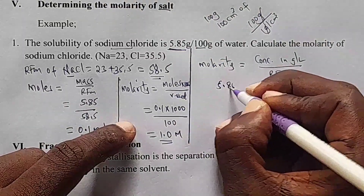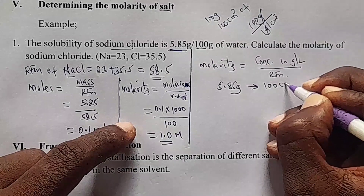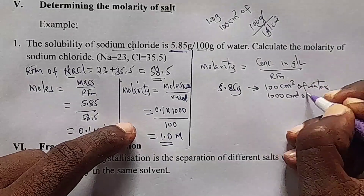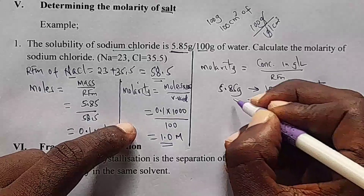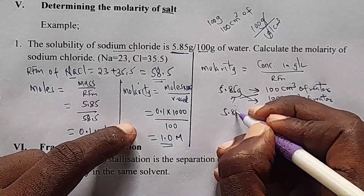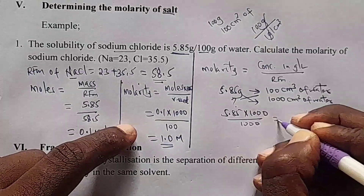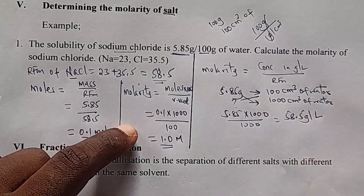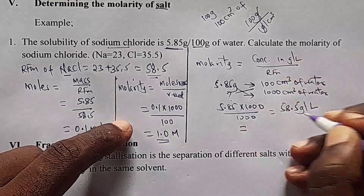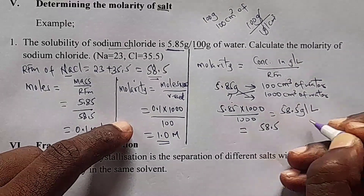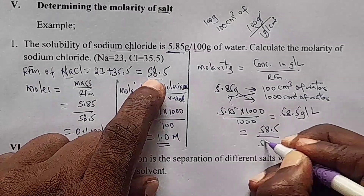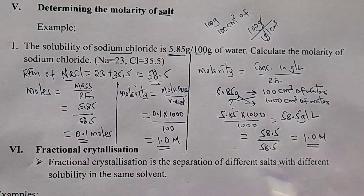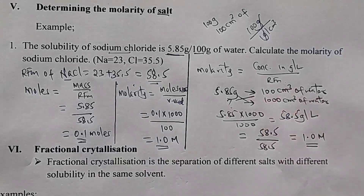The mass is 5.85 grams, dissolved in 100 grams or 100 cm³ of water. To find what mass dissolves in 1,000 cm³, we calculate: 5.85 × 1,000 ÷ 100 = 58.5 g/L. Using the formula, molarity equals concentration in g/L divided by RFM, which is 58.5 ÷ 58.5 = 1.0 mol/L. Both methods give the same answer of 1.0 mol/L.